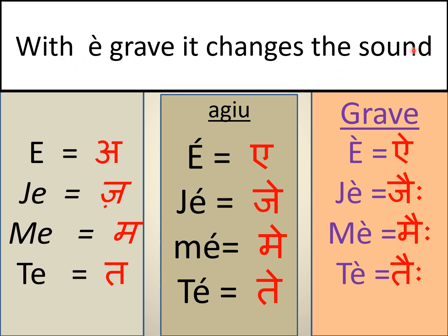With è (e grave), it changes only the sound. Let's compare: without any accent, with the aigu accent, and with the grave accent. For example, 'o' with 'a' and 'u' becomes 'au,' now it will be 'à.' So je, j'ai — let's read them together: e, é, è; je, j'ai. This shows the difference between no accent, the aigu accent, and the grave accent. Review this slide many times and you will understand it gradually.